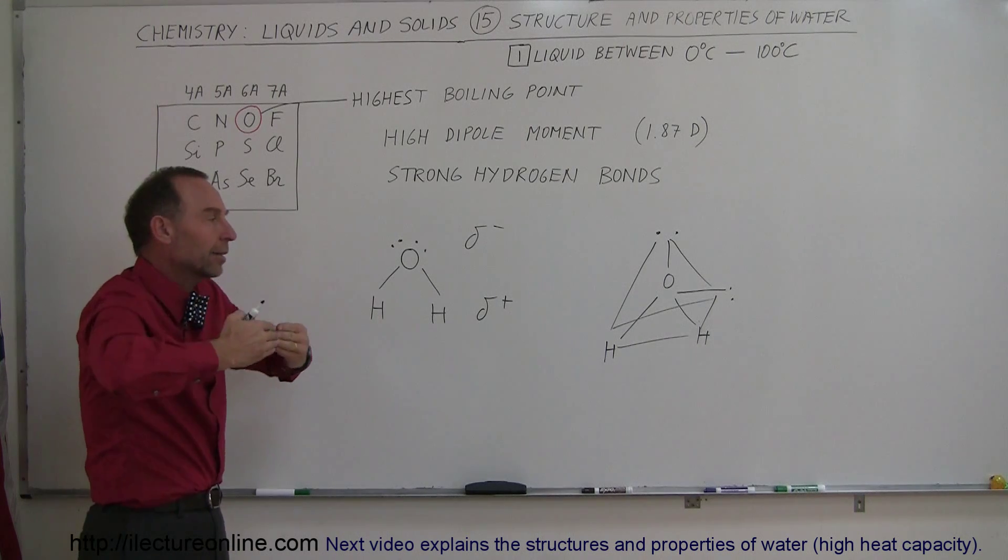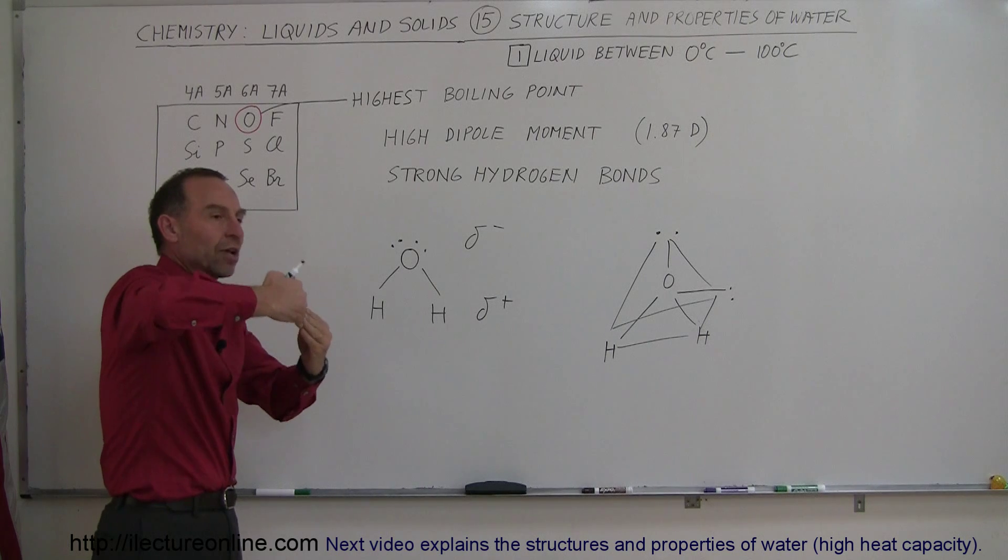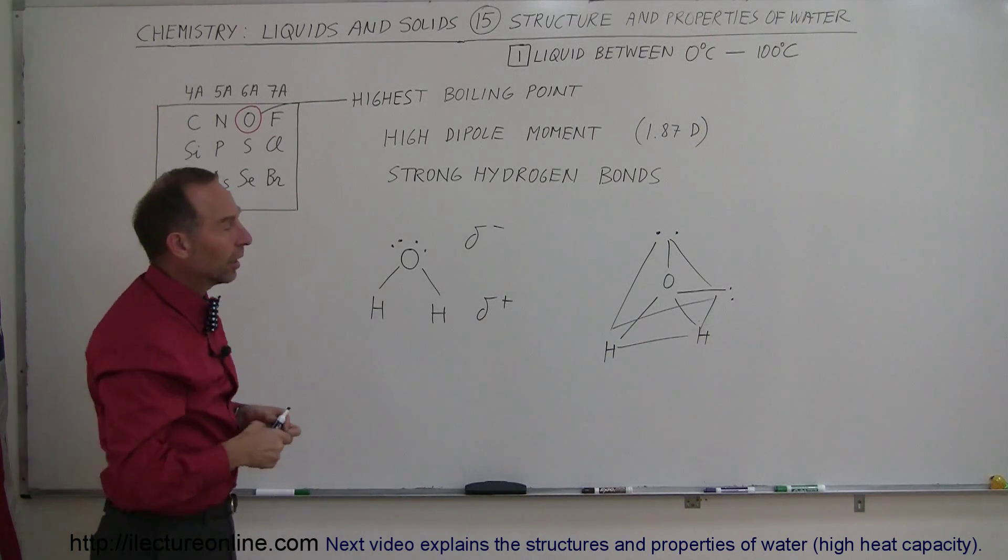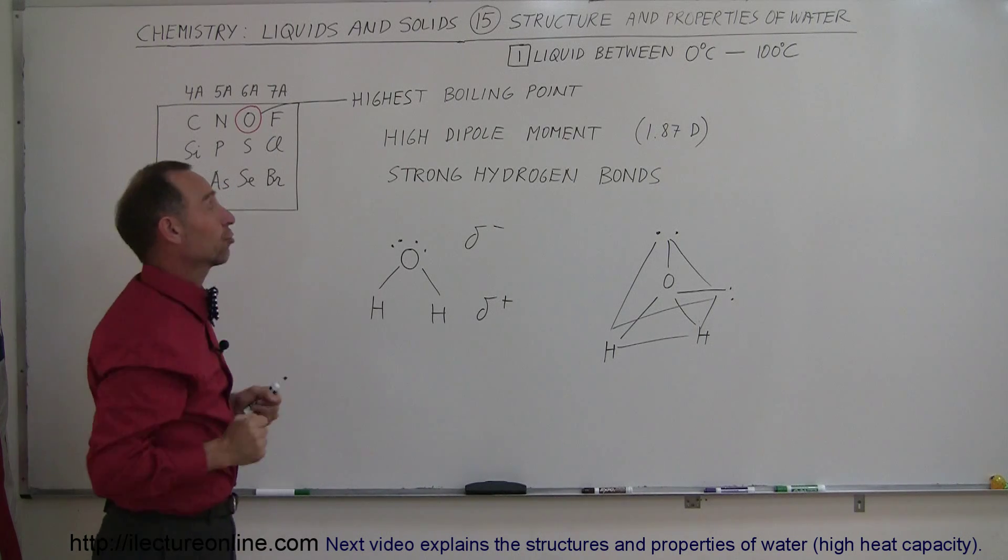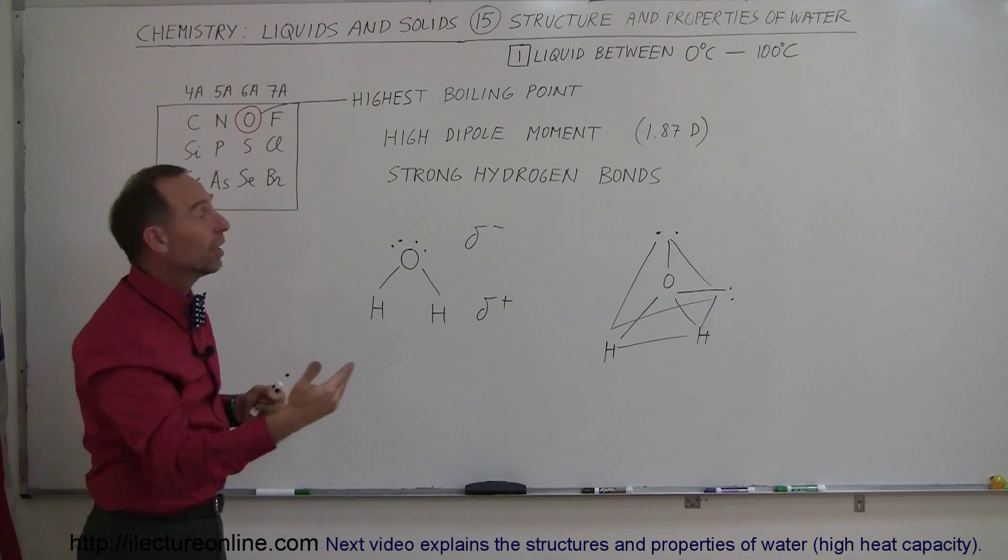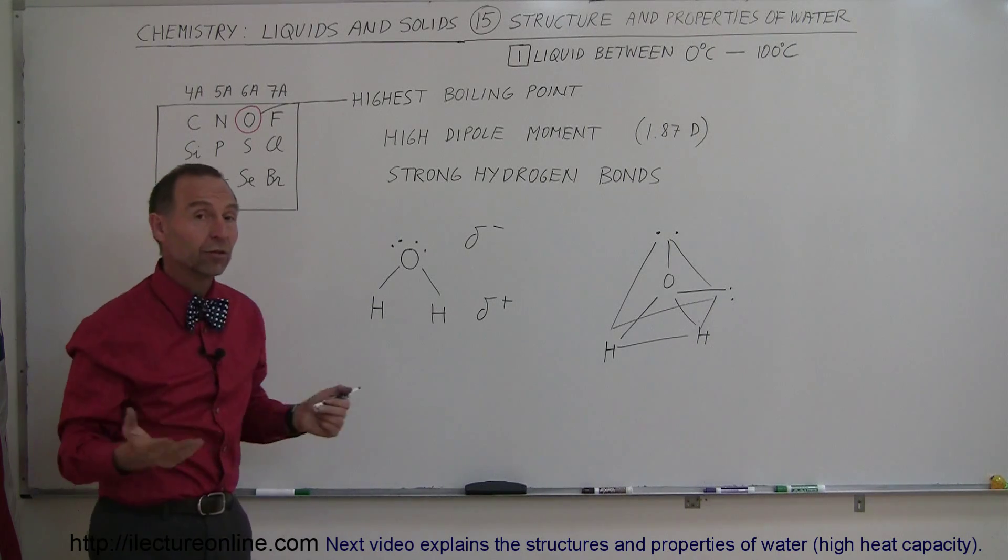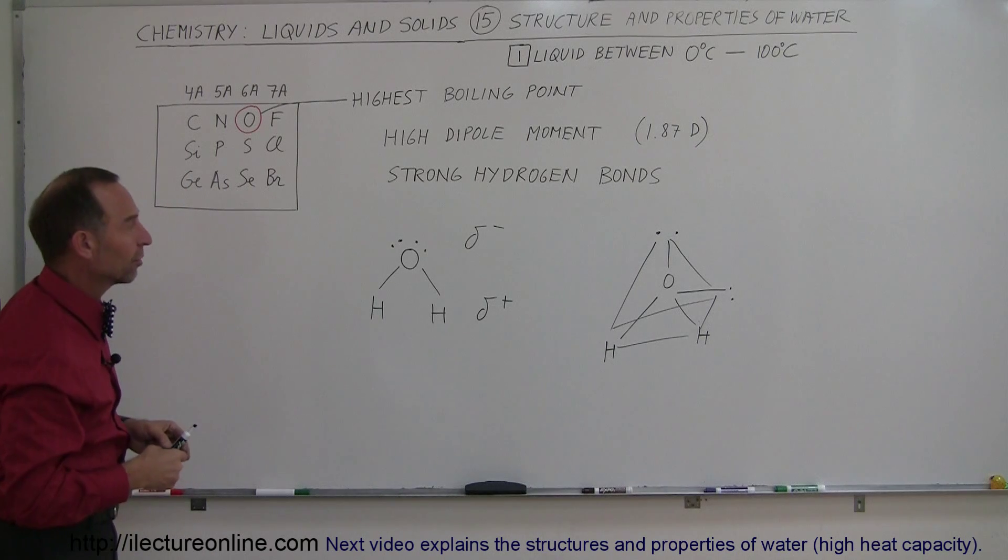The bonds will actually straighten out and cause you to have a very straight, strong bond, hydrogen bond between the oxygen and the hydrogens in such a way that you can have a very strong structure. Therefore it takes a lot of energy in order to melt the ice and turn into water, not until the temperature reaches 273 Kelvin or 0 degrees centigrade.